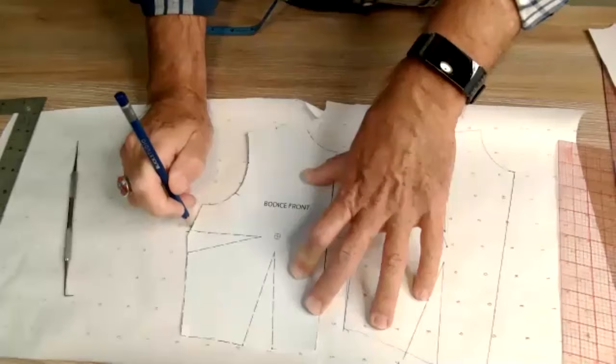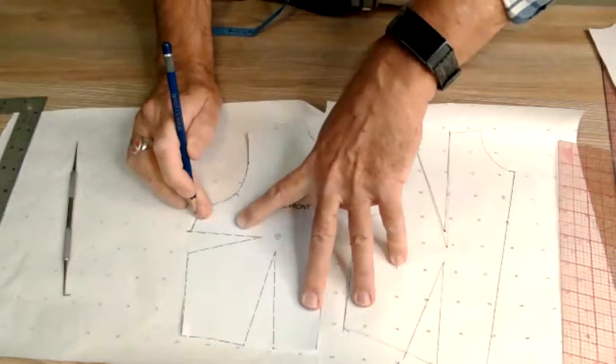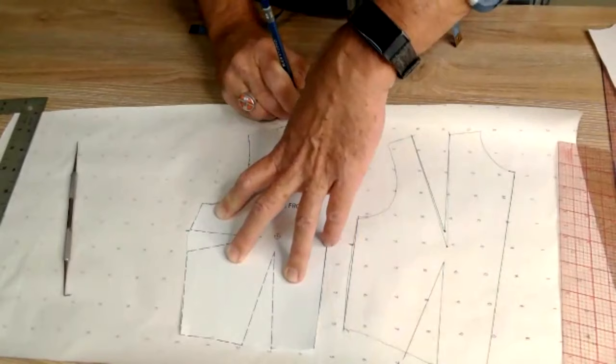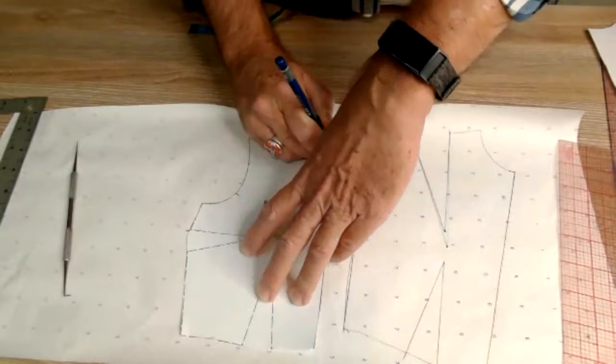You're going to go ahead and trace all the way around. You trace around from one leg of the dart, from the outside leg of the dart until you get to the outside leg of the other dart.